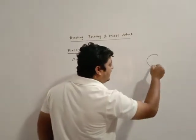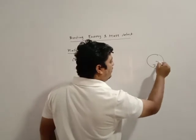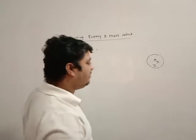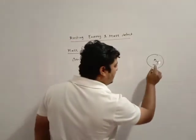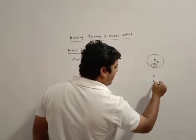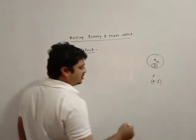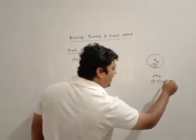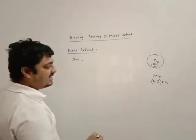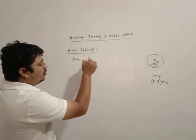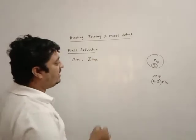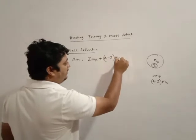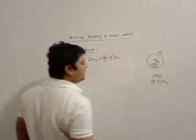Consider a nucleus with atomic number Z and mass number A. It has Z number of protons and A minus Z number of neutrons. Total mass of protons will be Z times Mp, and total mass of neutrons will be A minus Z times Mn. So mass of constituents of a nucleus is Z·Mp plus (A minus Z)·Mn. Let actual mass of this nucleus be M.